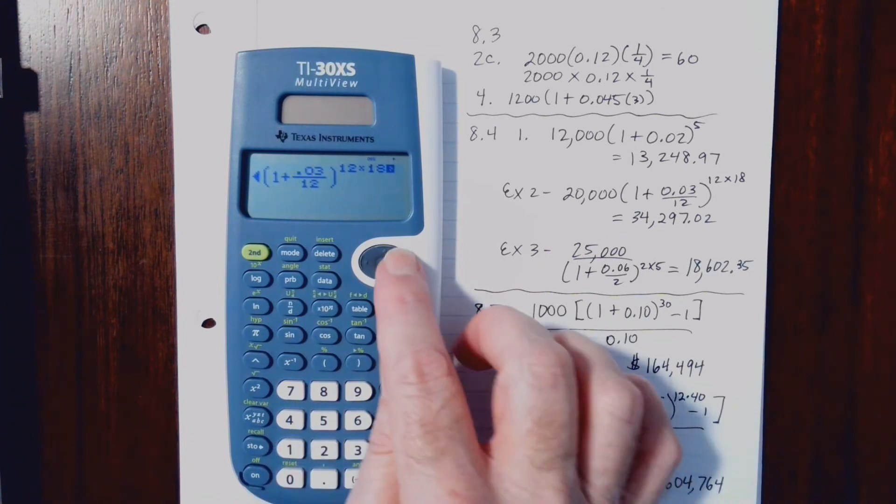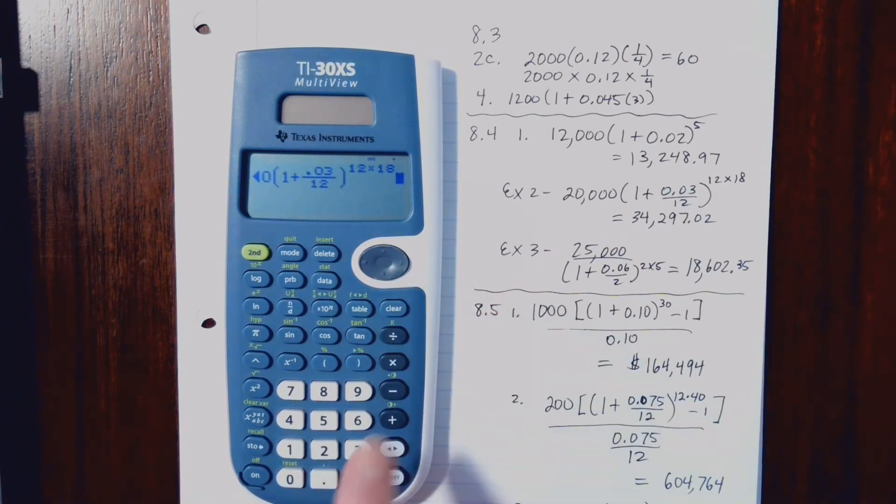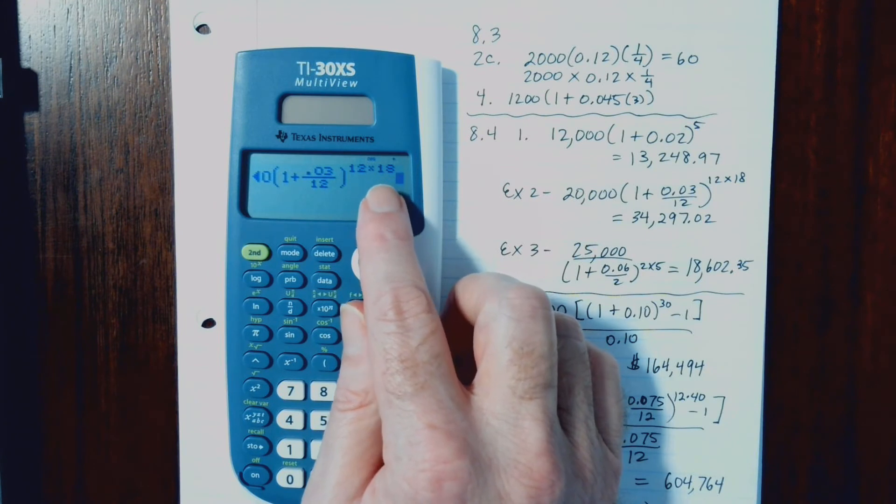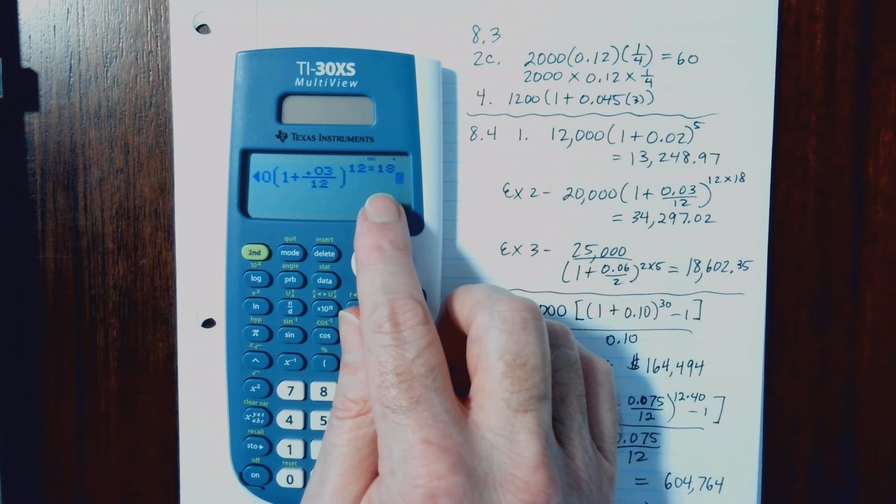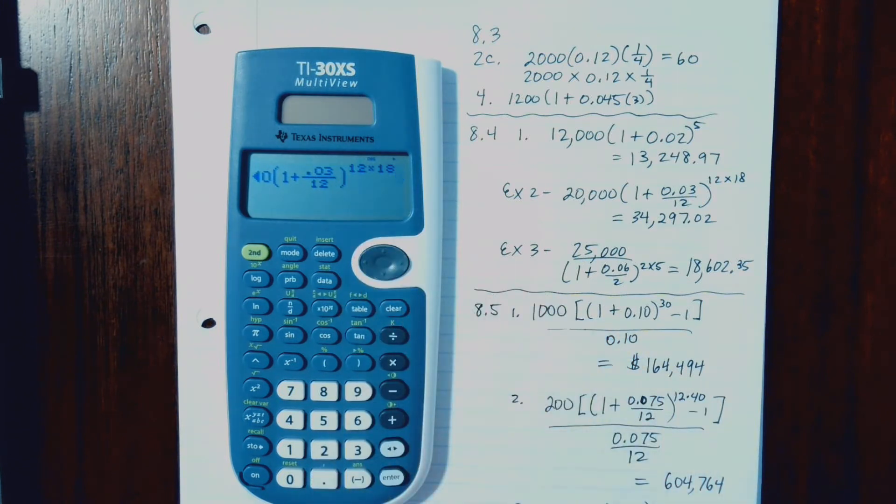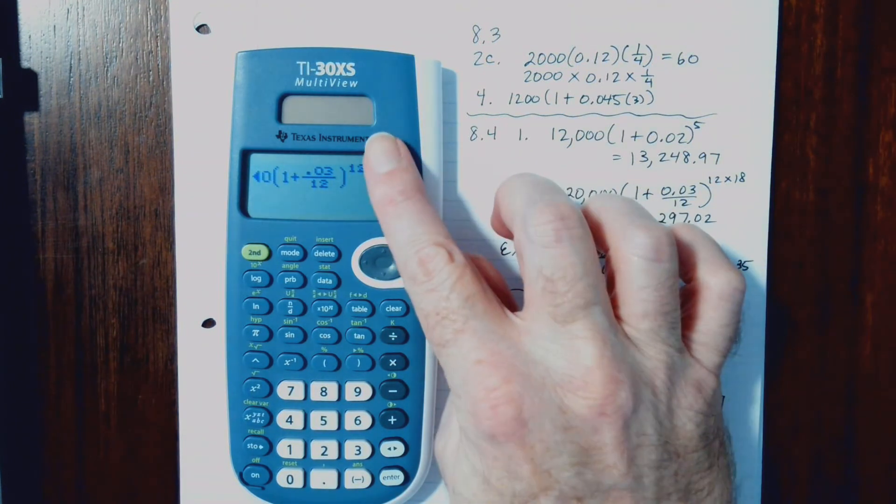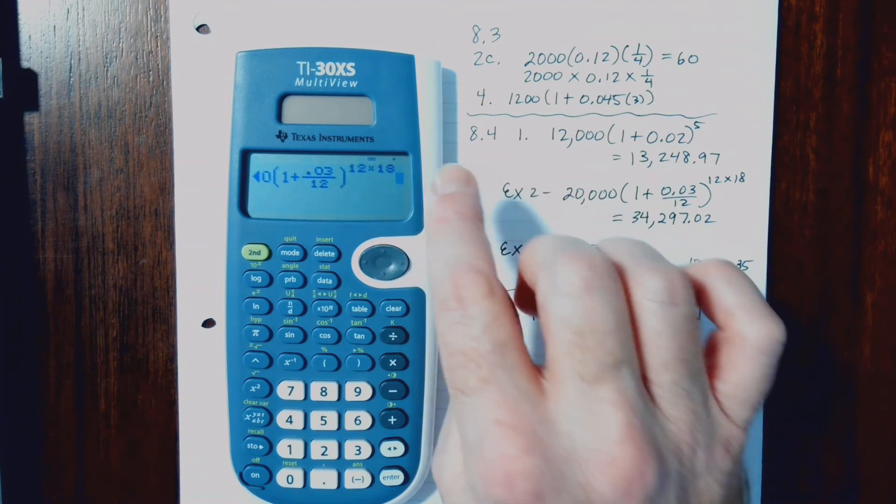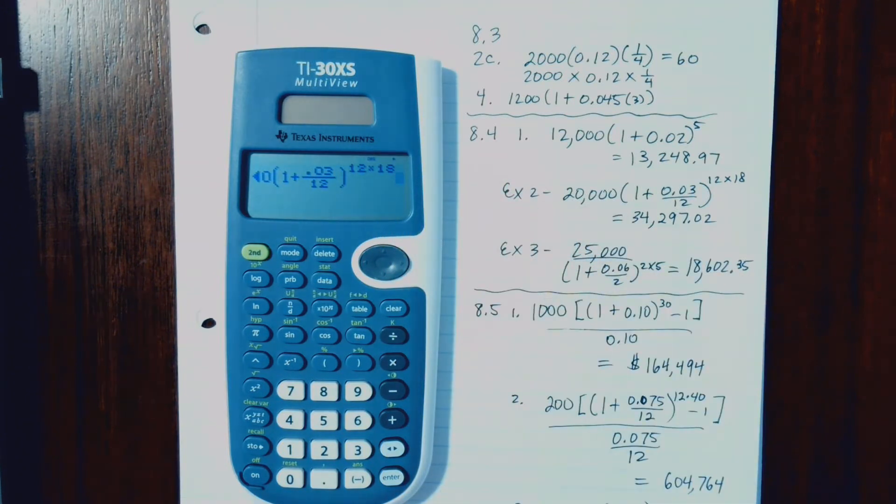Now, you'll notice what's really nice about this calculator and some of the newer calculators that you'll find is that it kept the 18 in the exponent here. And that's what we need. In a more basic calculator, you'll have to put the 12 times 18 in parentheses. Otherwise, your calculator will take everything in the parentheses to the 12th power and then multiply by 18. And that's not what we want. So that's where you have to be careful if you're not using a nice calculator like this one here.